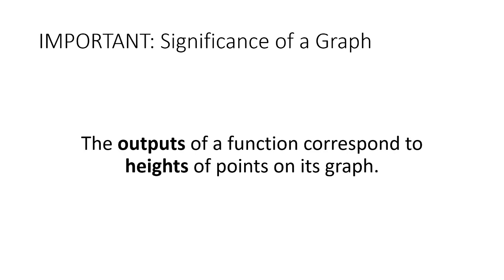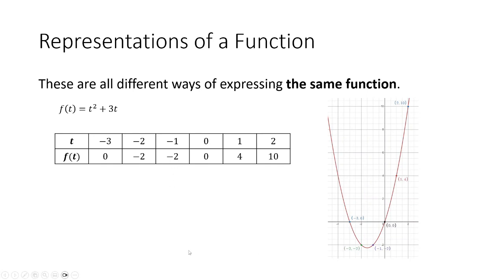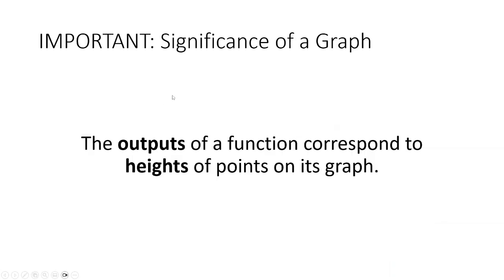As we go into the next couple of lectures in Calculus 2, here is the major takeaway: when you represent a function graphically, the different outputs of a function correspond to different heights of points on its graph. For example, if an output of 10 is associated with an input of 2, that corresponds on the graph to a point with a height of 10 units located over the horizontal position of 2. The outputs of a function correspond to heights of points on the graph.